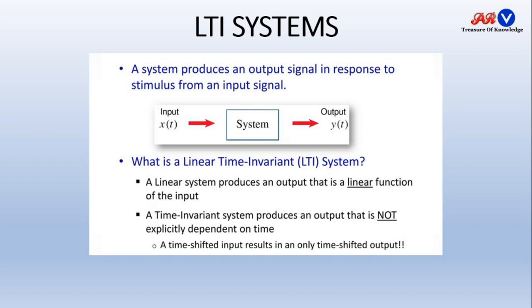Then we have time invariant. What is a time invariant system? It produces an output that does not explicitly depend on time. A time invariant system means it will not depend upon time. A time-shifted input results in only a time-shifted output. Whatever time shift occurs at your input side, it will occur at the output also. This is the time invariant system.